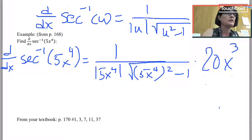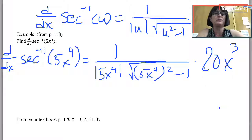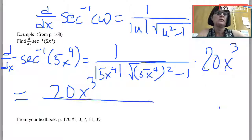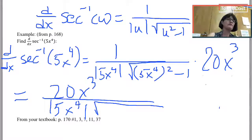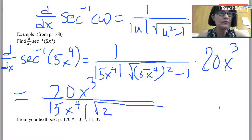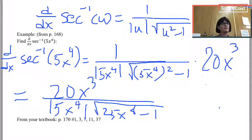So notice on the free response section, that's a fine answer if you wanted to simplify it. It's going to be 20x cubed over absolute value 5x to the 4th square root of 5x to the 4th all squared. The common error would be to say that that's 5x to the 8th, but it's really 25x to the 8th minus 1. Final answer.